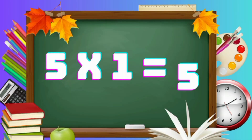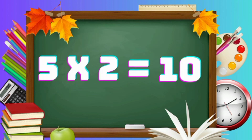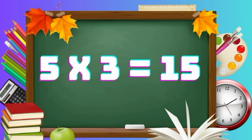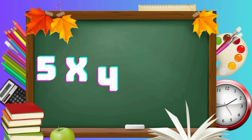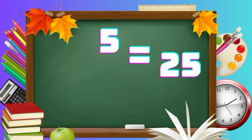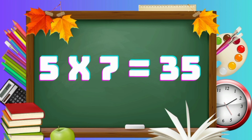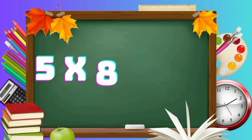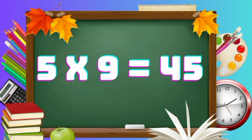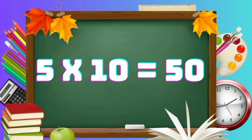5 ones are 5. 5 twos are 10. 5 threes are 15. 5 fours are 20. 5 fives are 25. 5 sixes are 30. 5 sevens are 35. 5 eights are 40. 5 nines are 45. 5 tens are 50.